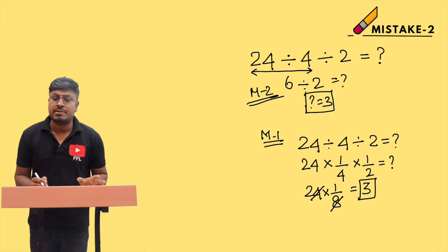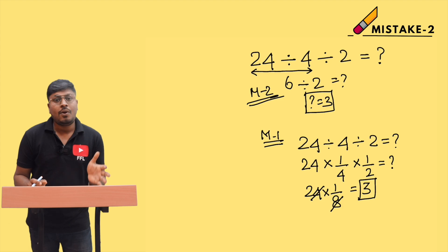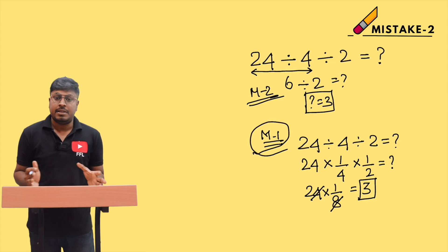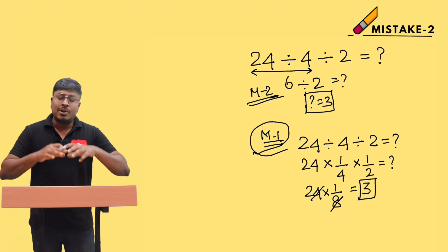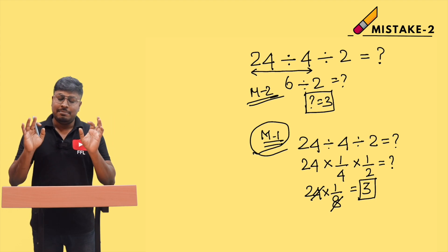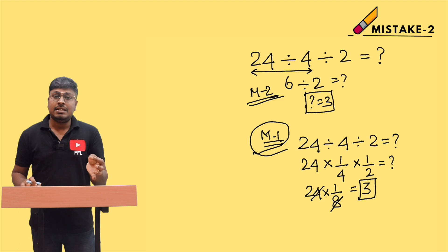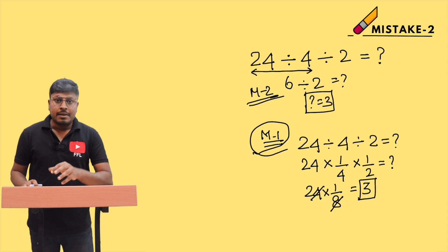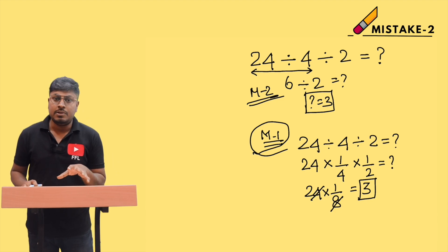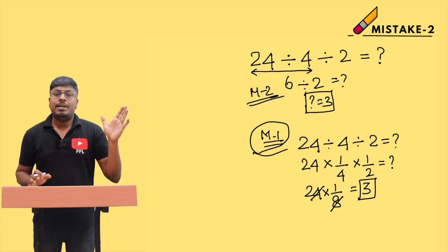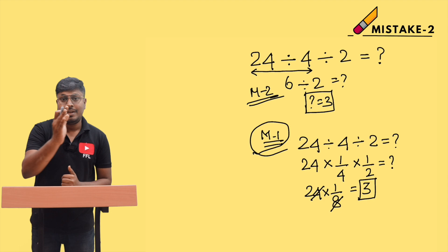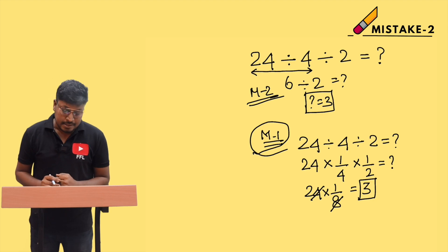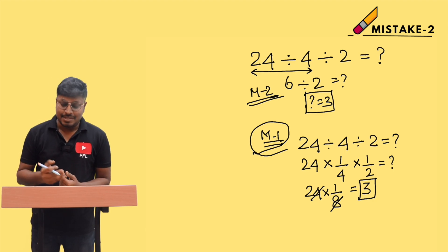I always recommend Method 1 — converting division to multiplication by reciprocating the nearby number — because it avoids confusion about direction. But also understand Method 2: solve left to right. Solving from right to left is wrong. Most students make this mistake, so make sure you don't repeat it.